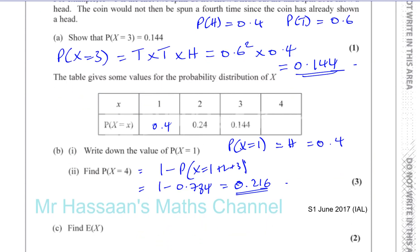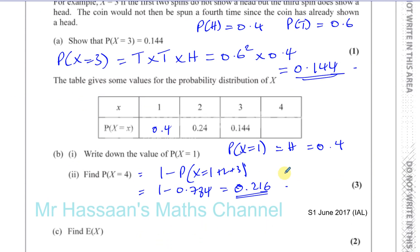Now we could have got part two in another way, which is longer. I'll just show you so that it makes sense. This is 0.216 because all the probabilities must always add up to 1. I want to show you another way of doing it so you understand the concept of what's going on here.